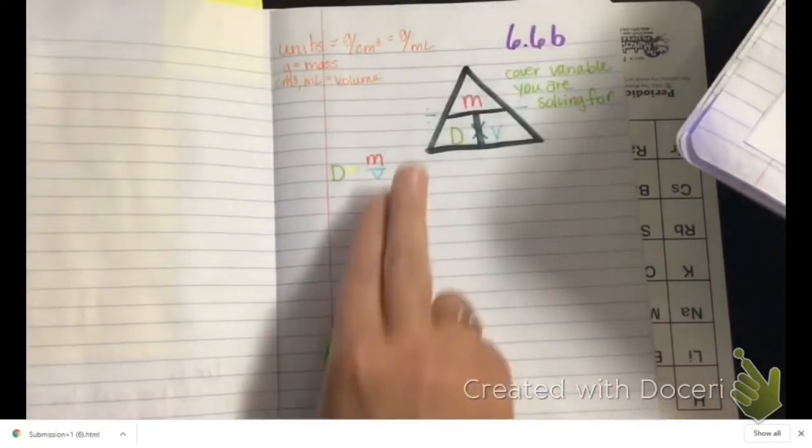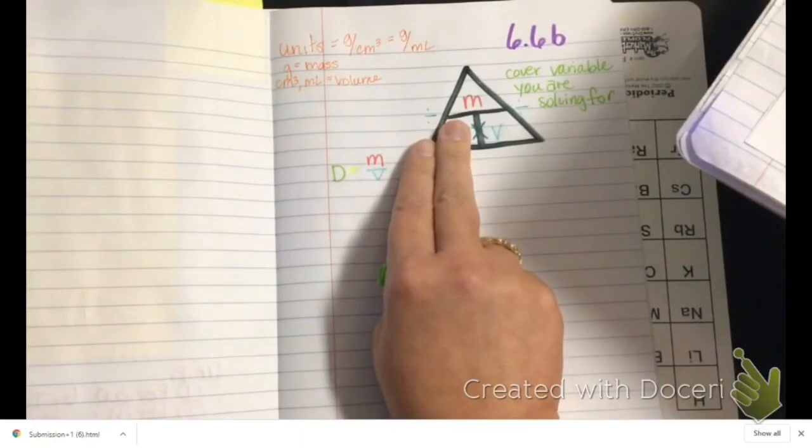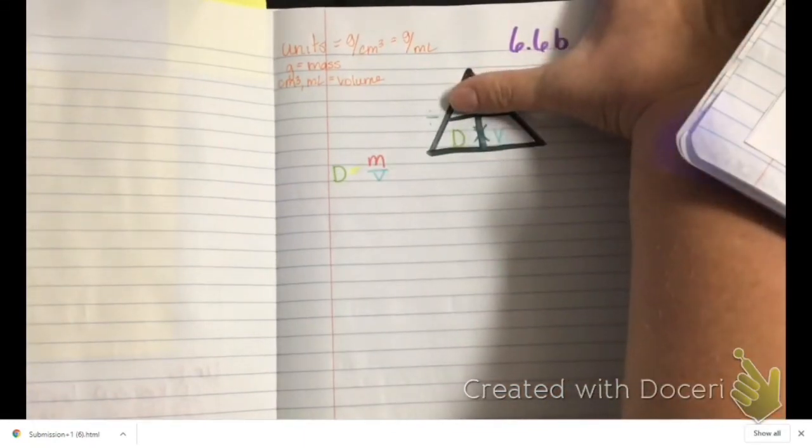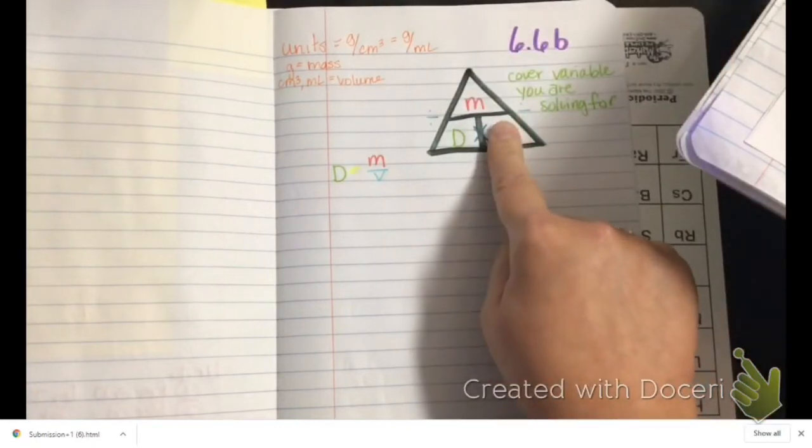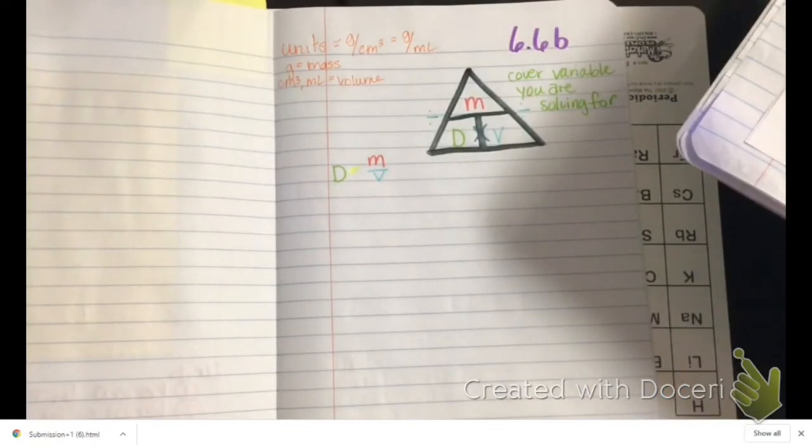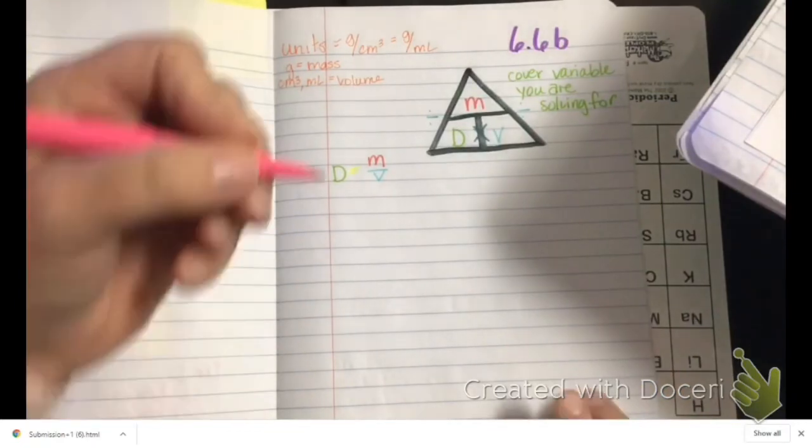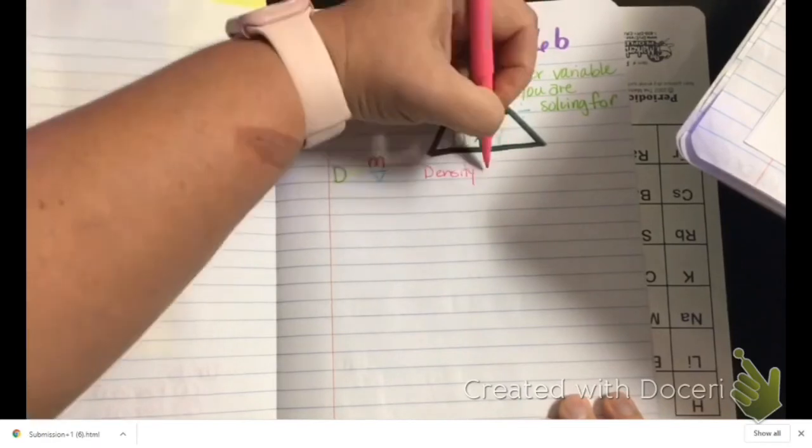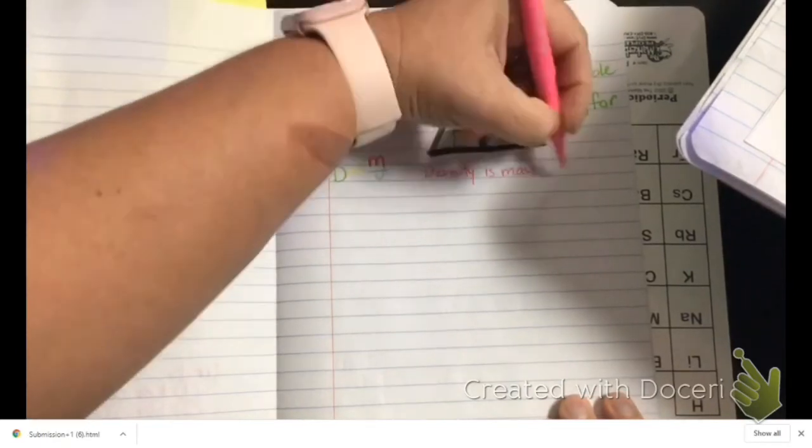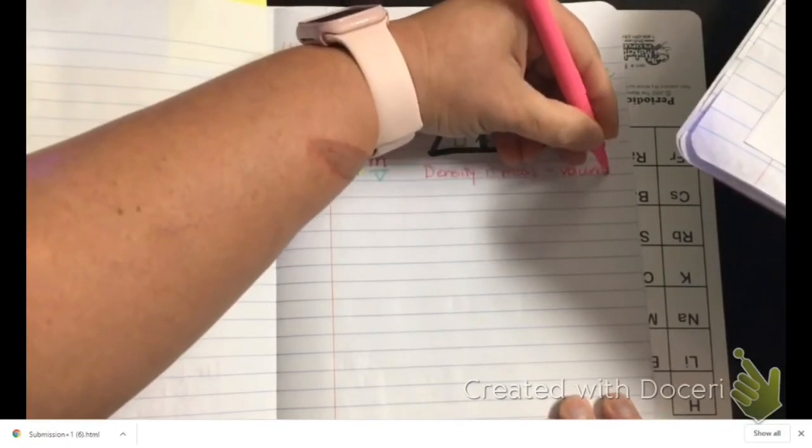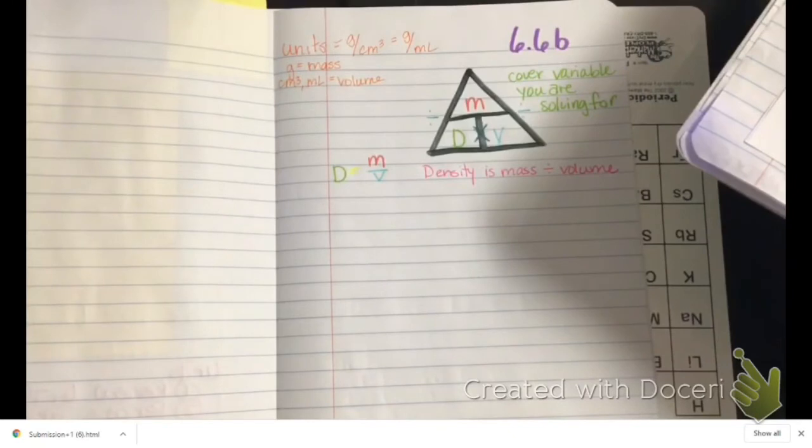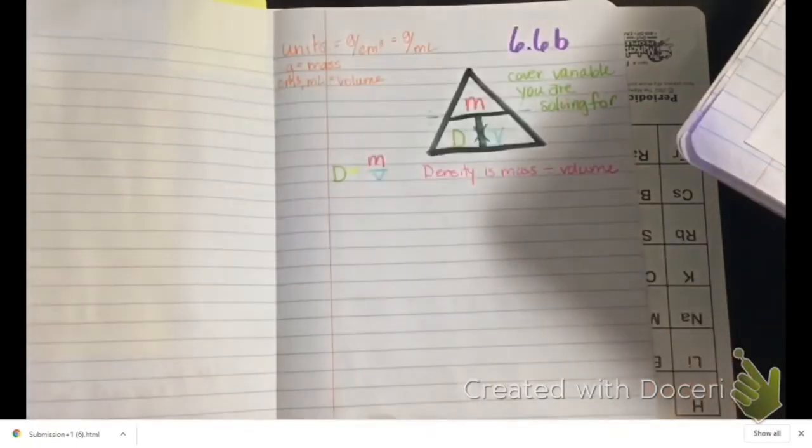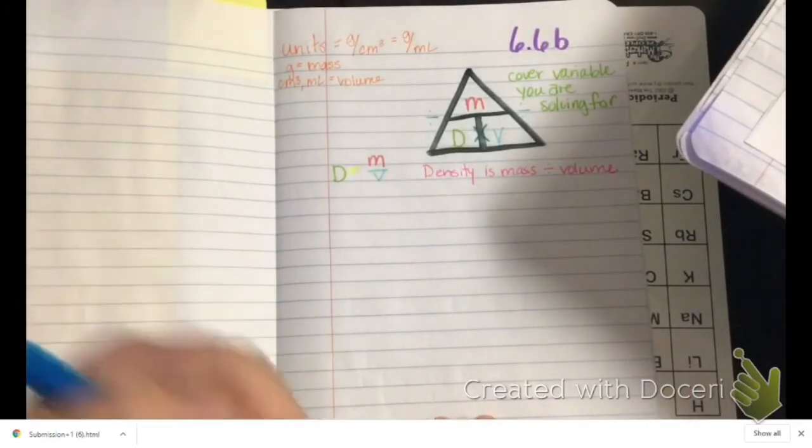Because mass over volume is the formula, my mass has to be up top and my volume has to be below it. In this triangle, anything that is side by side, I multiply. Anything that is above and below, I divide. So in order to use this density triangle, I simply cover the variable that I'm solving for. So in this case, if I were solving for density, I'd cover it - I'm left with mass divided by volume. If I were solving for mass, I'd cover it - I'm left with density times volume. And lastly, if I'm solving for volume, I'm left with mass divided by density. So I do want you to jot down on here that density is mass divided by volume in words so you don't forget what this means. Density is mass divided by volume.